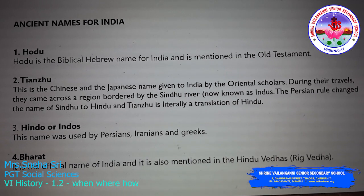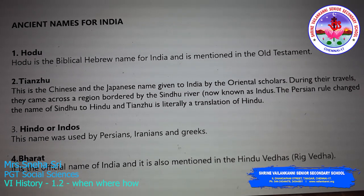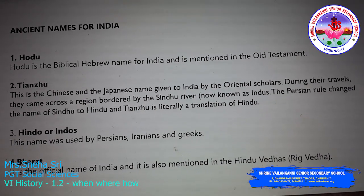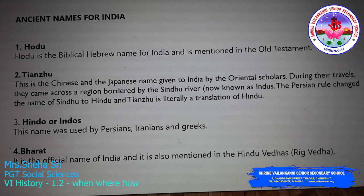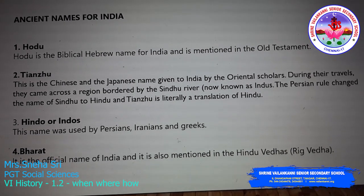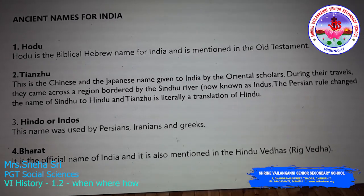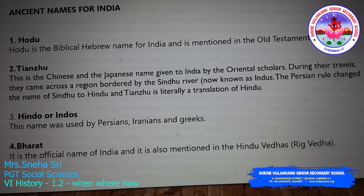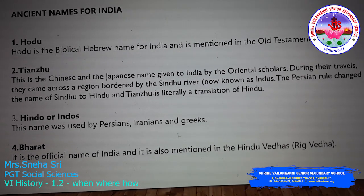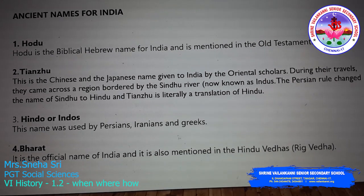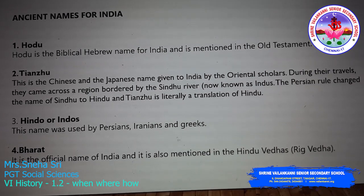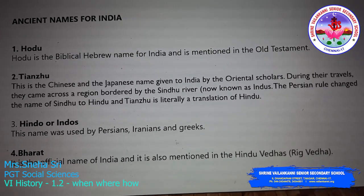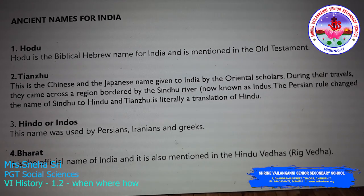Moving on to the next topic: just as everyone has many names — a name in school, a name among friends, a name among family — similarly, India in ancient times also had certain different names. Hodu is a Biblical Hebrew name for India, mentioned in the Old Testament. Initially, the river Indus was called Sindhu; the Persian rulers changed the name from Sindhu to Hindu. Later, the Chinese and Japanese called India as Tianshu, which is a translation of the word Hindu.